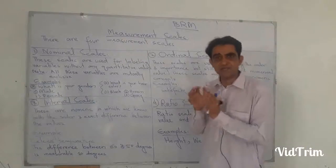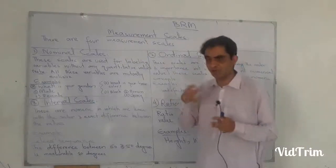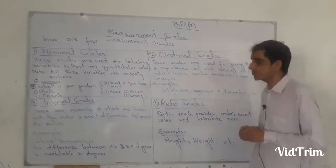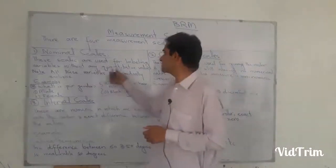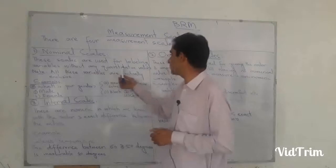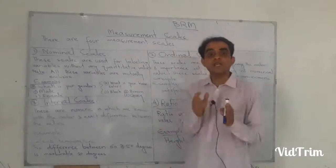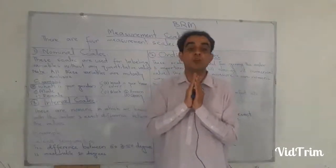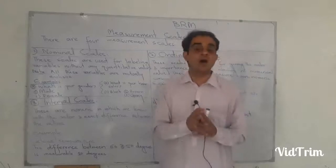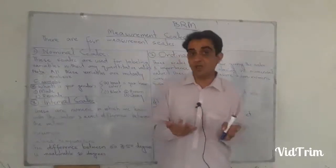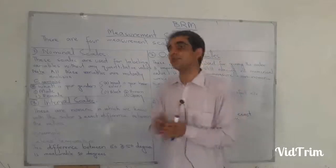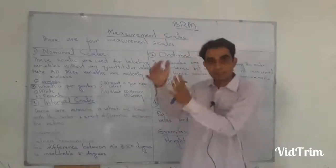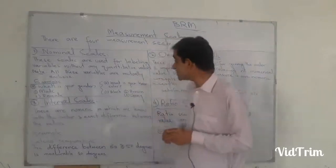Starting with number one: the nominal scale. Measurement starts with the nominal scale, and we use it in our questionnaires and measurements. It is very simple and the most commonly used scale in research. These scales are used for labeling variables without any quantitative value — just to give names to something. There is no numerical value, no kilograms, no meters — no quantitative measurement at all.